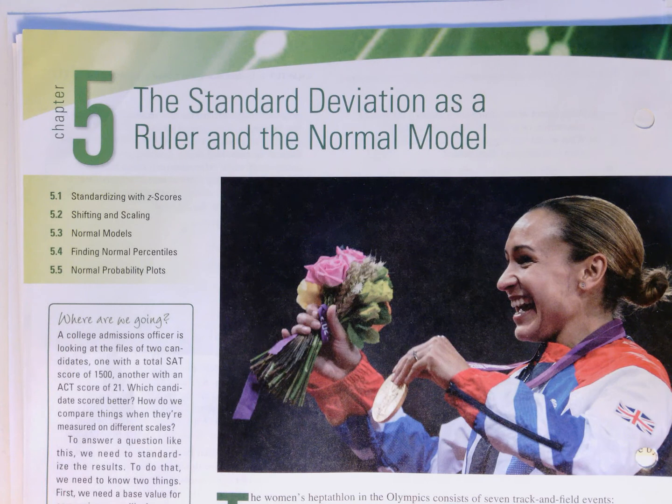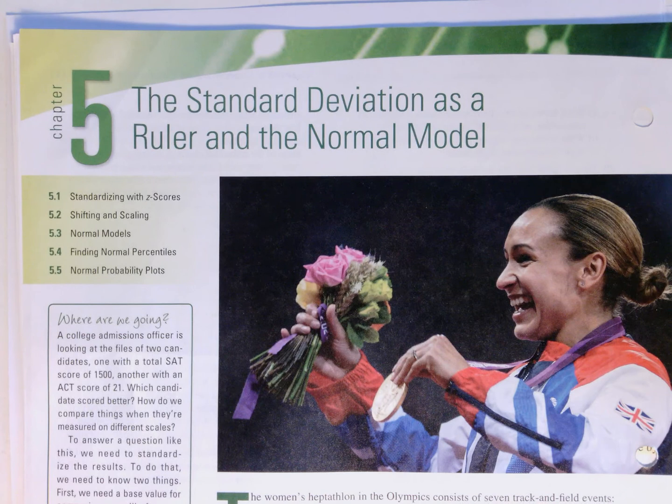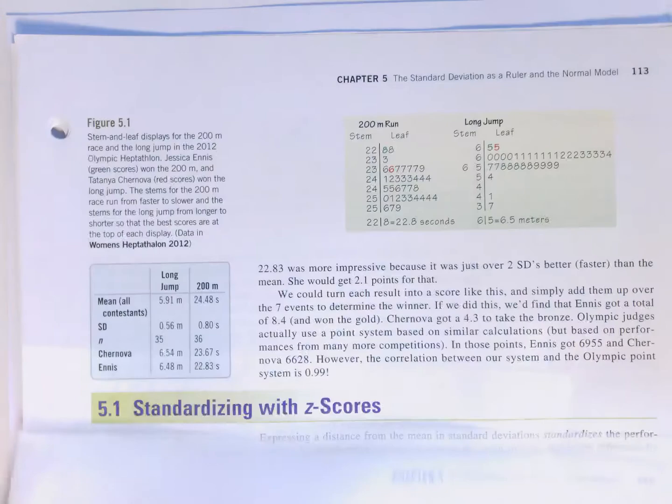This is introduced in terms of an example to compare performance of athletic outcomes of the Olympics, starting with a stem and leaf plot to compare these.